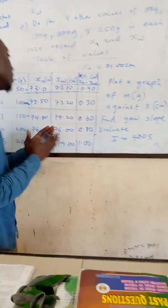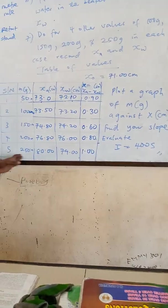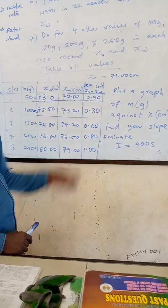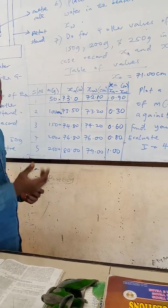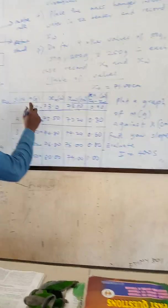So after doing this carefully, we are going to plot a graph of mass against X. Mass is on the vertical axis and X is on the horizontal axis, starting both axes at the origin. Make sure you pick a scale that is going to be convenient in plotting these.